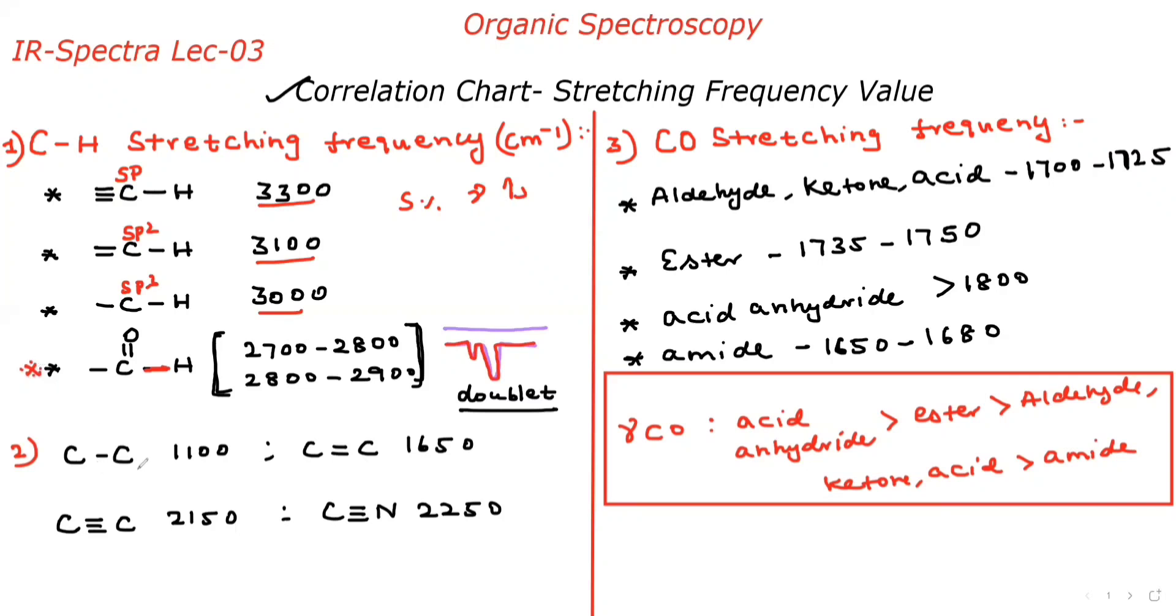Now go for the carbon-carbon single bond, carbon-carbon double bond, and carbon-carbon triple bond. Again hybridization: this is SP3, here SP2, here SP. Therefore, SP has more S character so the value should be 2150, and SP2 is 1650, and here 1100. When S character increases, the stretching frequency increases.